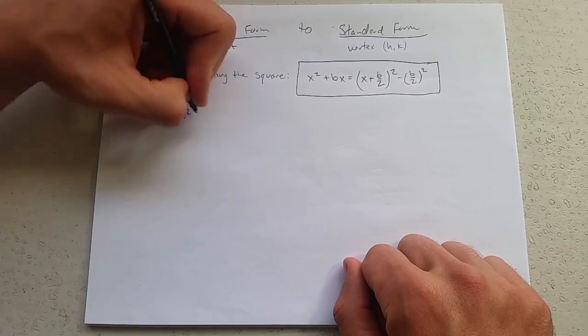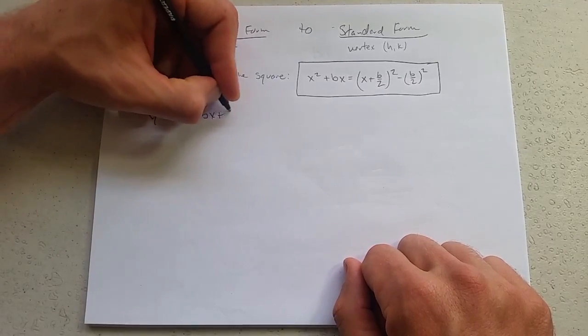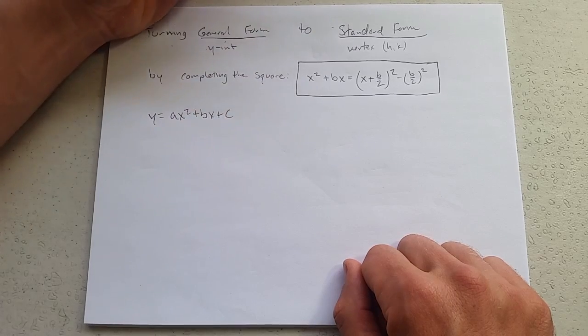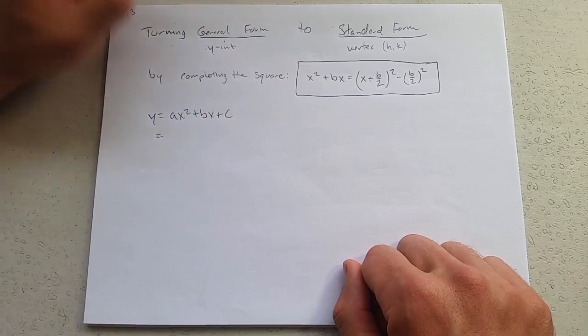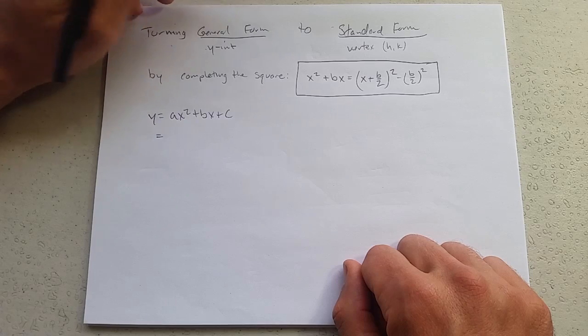y equals ax squared plus bx plus c, and we're going to turn to standard form. So here we go. A lot of the same moves as before.